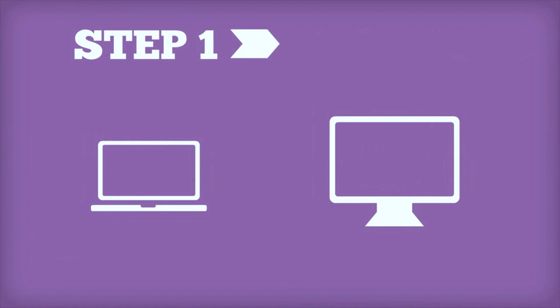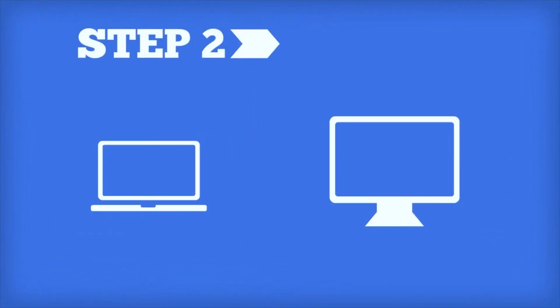Let's check out how this handshake works. First, the source communicates with the sync device to determine if it is powered on and available for use. Then the sync sends a signal back, alerting the source that it has received the signal.